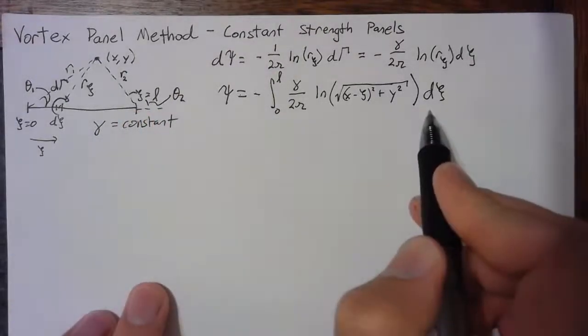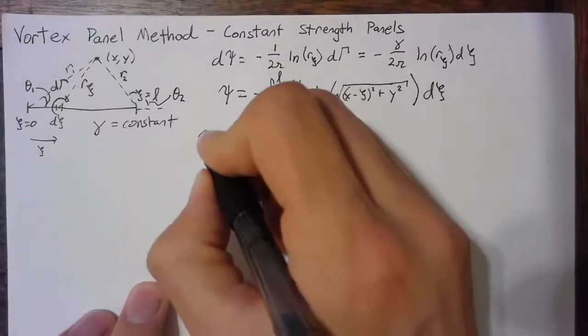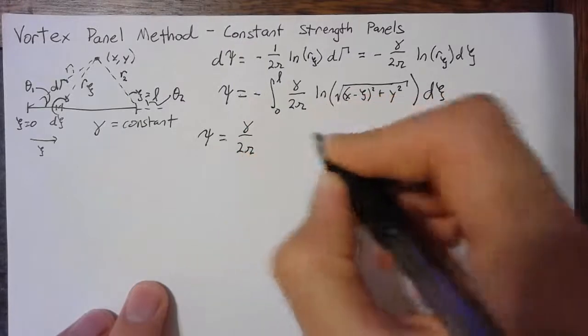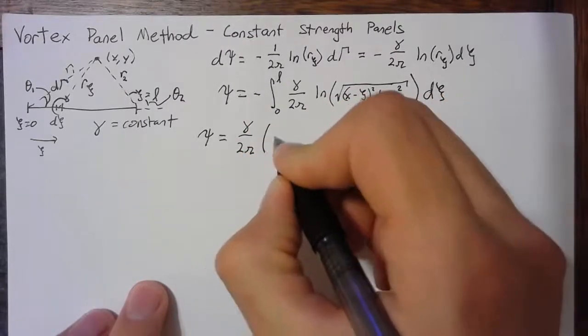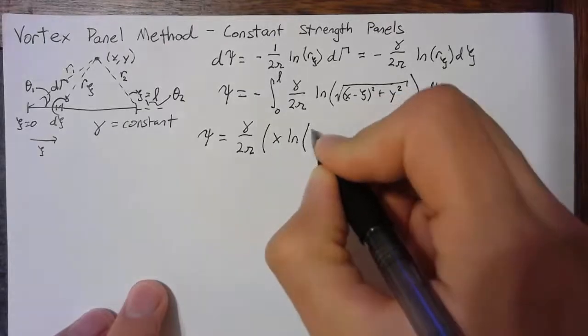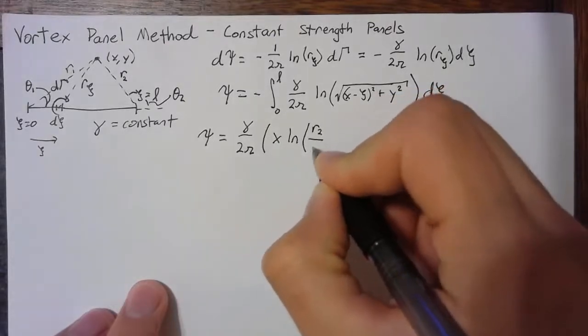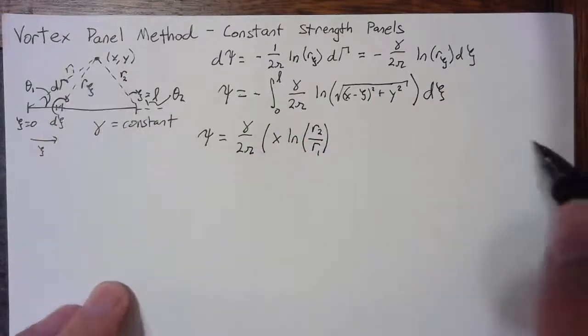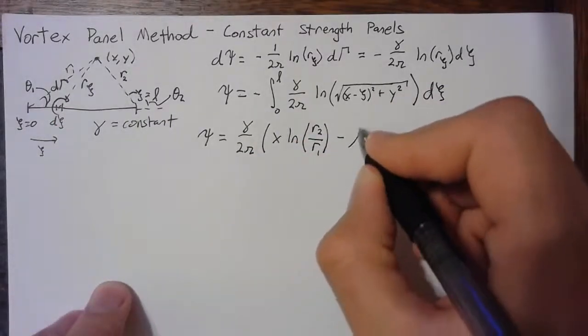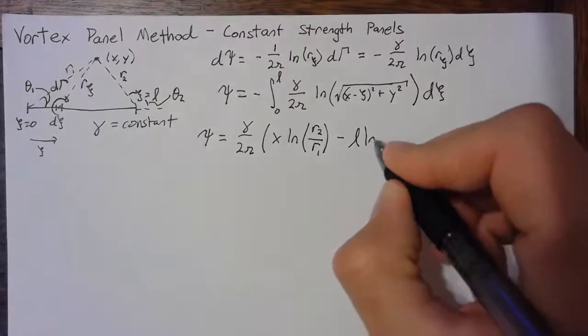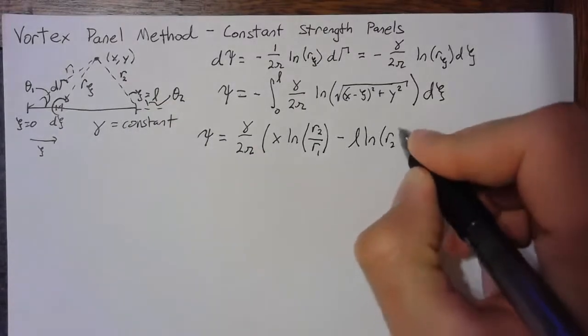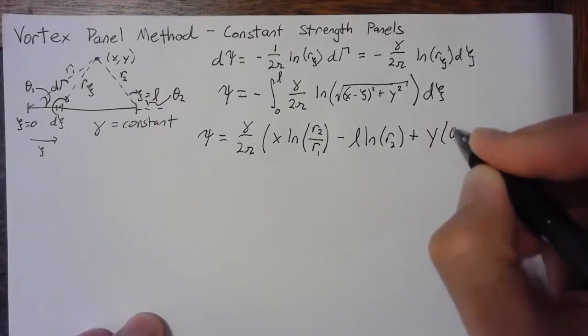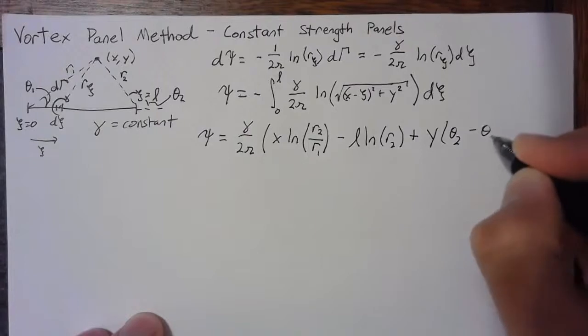The integral of all this is going to be gamma over 2 pi x times the natural log, then we have this ratio of distances r2 and r1, minus the length of the panel times the natural log of r2, and then we also add y times theta2 minus theta1.